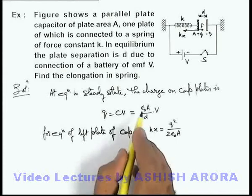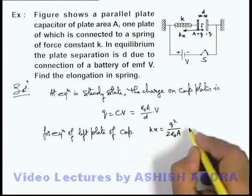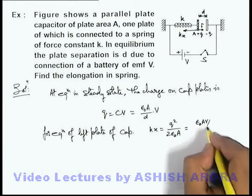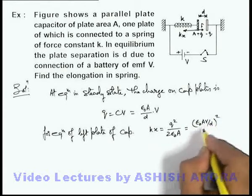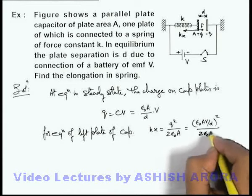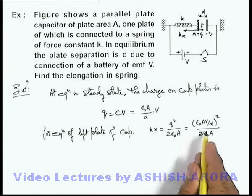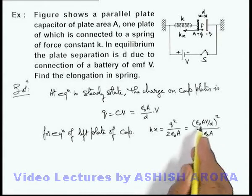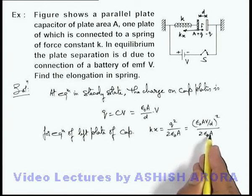And if we substitute the magnitude of charge over here, the result will be epsilon not A V by d, whole square, divided by 2 epsilon not A. On simplifying, we can see here epsilon not A gets cancelled out by 1 epsilon not A in denominator.